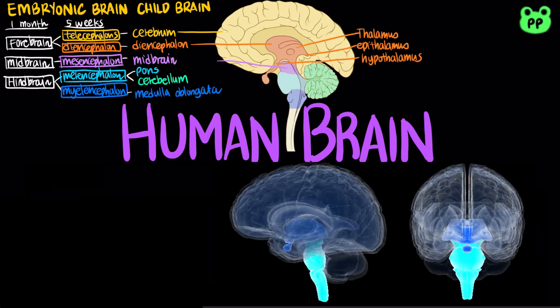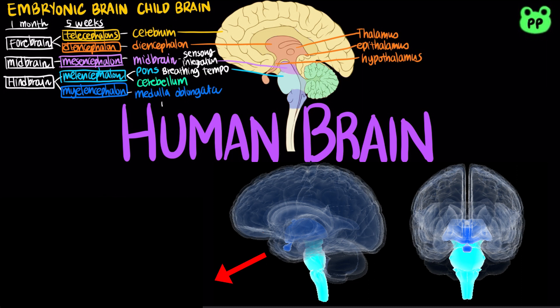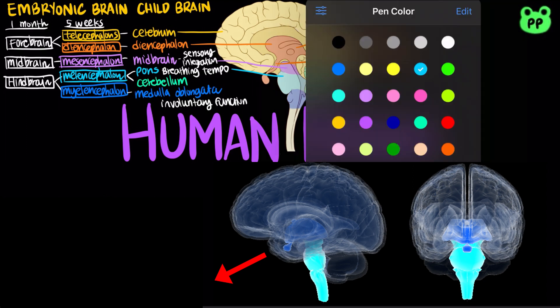The brainstem coordinates and conducts information between brain centers. It includes three parts. The midbrain contains centers for receiving and integration of sensory information. The pons regulates breathing centers in the medulla. The medulla oblongata contains centers that control involuntary functions such as breathing, cardiovascular activities, swallowing, vomiting, and digestion.